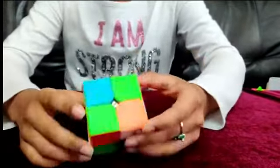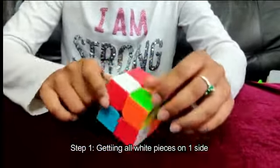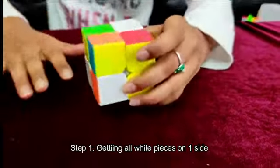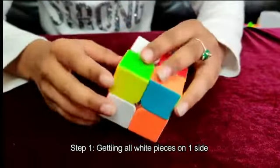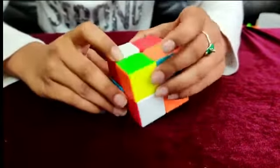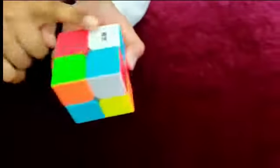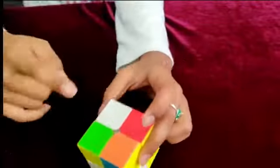So the first step to solving the Rubik's Cube is to get the white pieces on one side. So I'm going to start with one of the sides that there's a white piece on, which is this side, and I'm going to get the rest of the white pieces on this side.